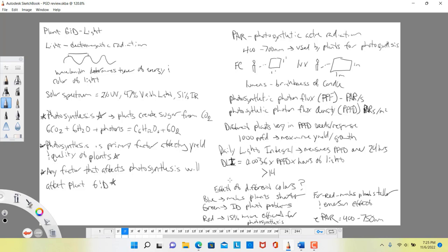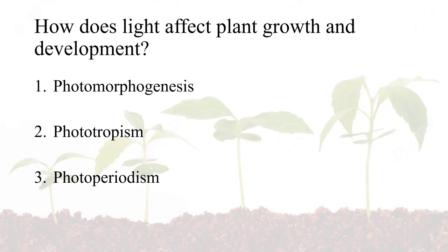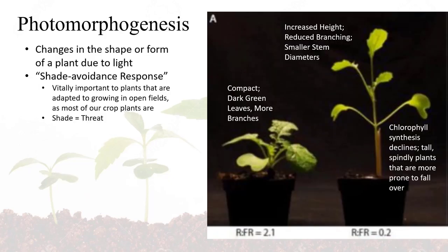That completes the review. Let us now continue with the rest of our light lecture. In this lecture, we are going to focus on three responses that plants have towards light: photomorphogenesis, phototropism, and photoperiodism. We will start with photomorphogenesis, which is a change in the shape or form of a plant due to light.